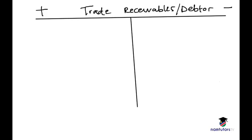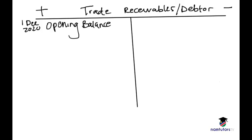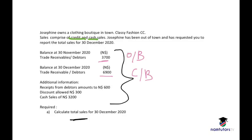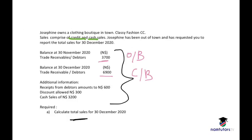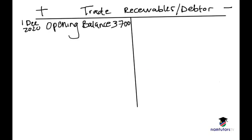We start with the opening balance on 1 December 2020 of 3,700 on the debit side. Then we enter the closing balance — the 30 December balance — of 6,900.